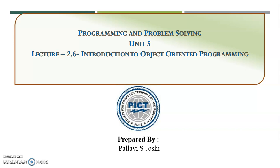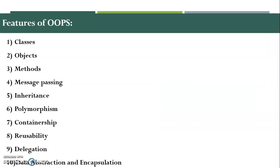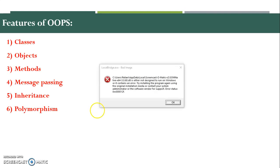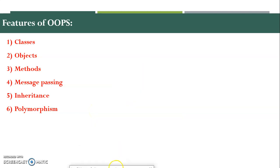Today we are going to focus on the further features of Object Oriented Programming. Till now we are done with Classes, Objects, Methods, Message Passing, Inheritance and Polymorphism.